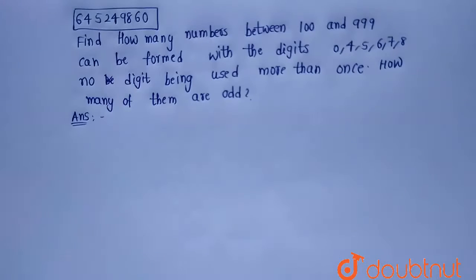Hello everyone. Today's question is: find how many numbers between 100 and 999 can be formed with the digits 0, 4, 5, 6, 7, 8 with no digit being used more than once, and how many of them are odd.